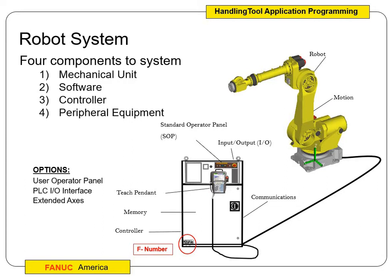Our robot system has four major components. We have the mechanical unit — the actual robot itself, the six-axis arm. Everything you see in yellow with the base underneath is the mechanical unit, not including the tool. The tool falls under peripheral equipment, so anything else peripheral — whatever the tool is, whether it's a gripper, a welder, a vacuum — along with a camera or vision system, or even a 3D print head.